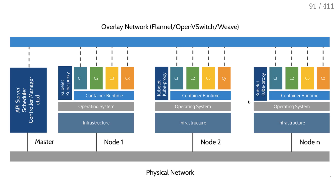So what do we have? On the left, the blue rectangle is the control plane. The control plane is basically the brains of the cluster. It's composed of a handful of services: API server, scheduler, controller manager, and etcd. I will give more details about them in just a minute.